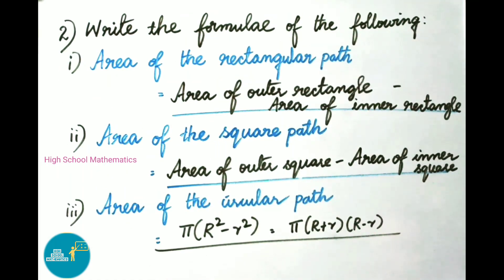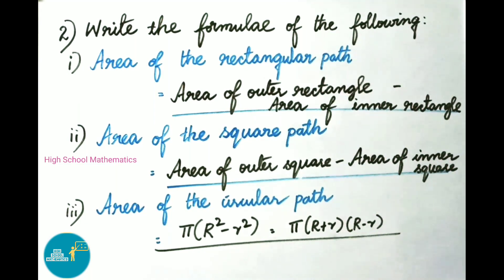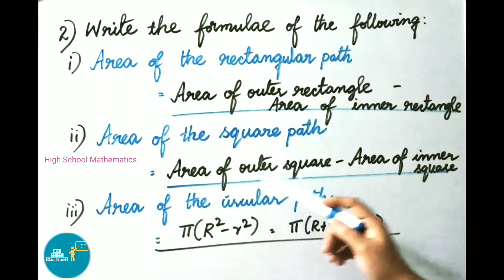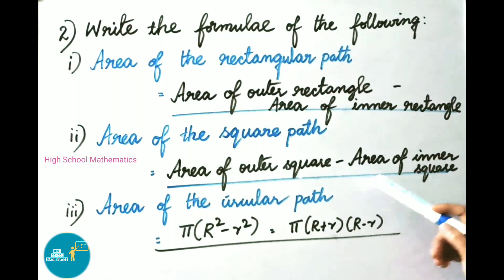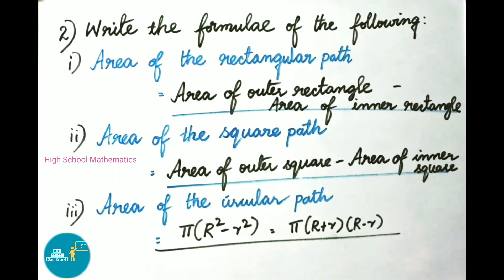Question number 2: write the formula of the following. Area of the rectangular path equals area of outer rectangle minus area of inner rectangle. Area of the square path is area of outer square minus area of inner square. Area of the circular path is pi into (R squared minus r squared), which equals pi into (R plus r) into (R minus r).